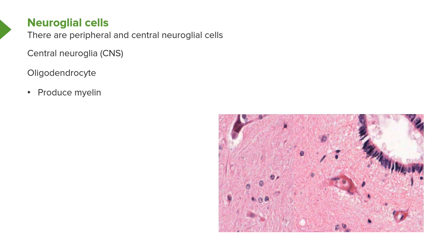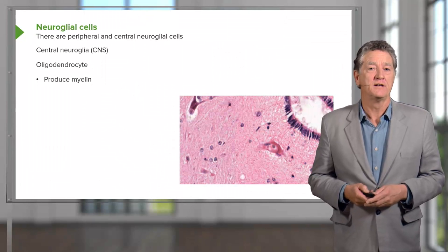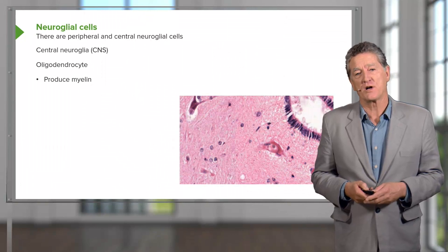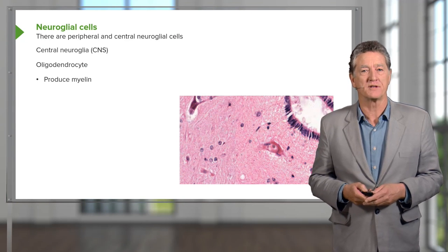The Schwann cell is only responsible for myelination in the peripheral nerve. Oligodendrocytes are quite easy to identify in sections. This happens to be a section through the grey matter of the spinal cord. Up the top left-hand side you can see what is perhaps a ventral horn cell — it's shrunk away from the tissue a bit and there is a whitish halo around it.